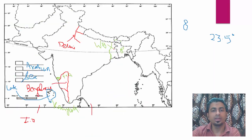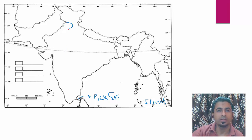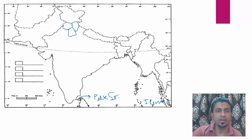Now next we have Chandigarh. Chandigarh is the common capital of Punjab and Haryana. This is somewhat your Punjab, and Chandigarh is somewhere here.